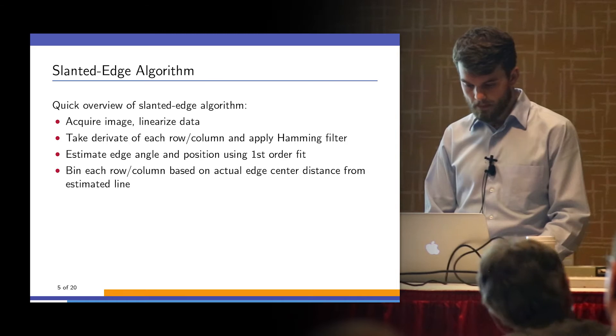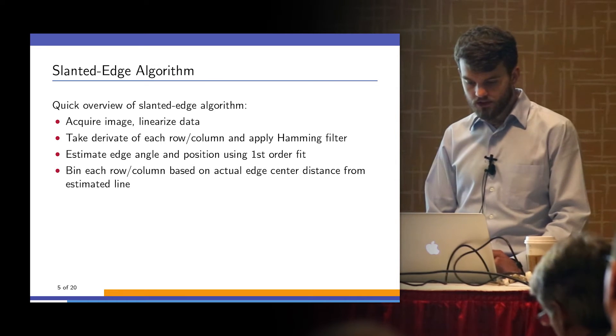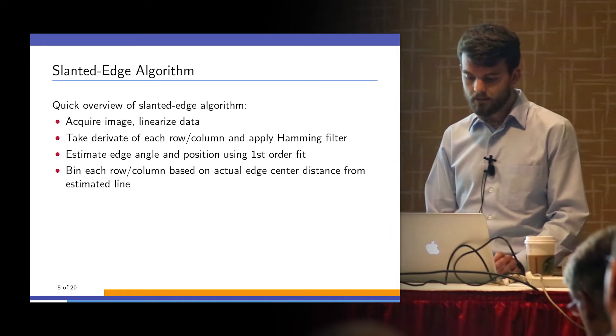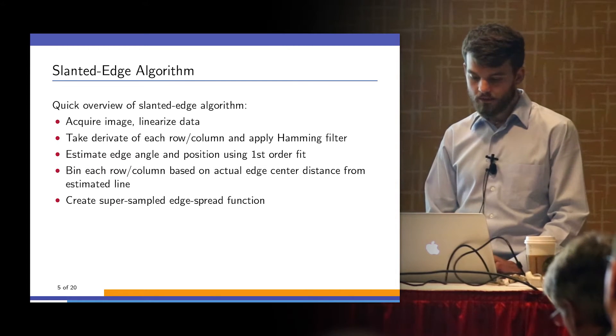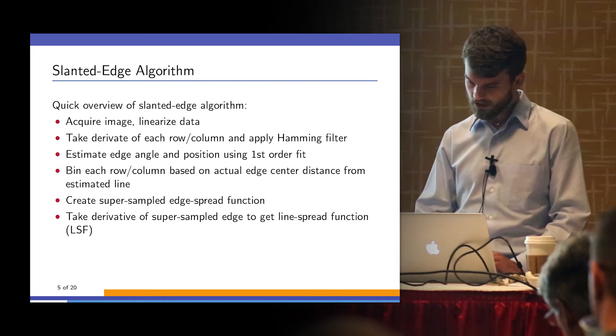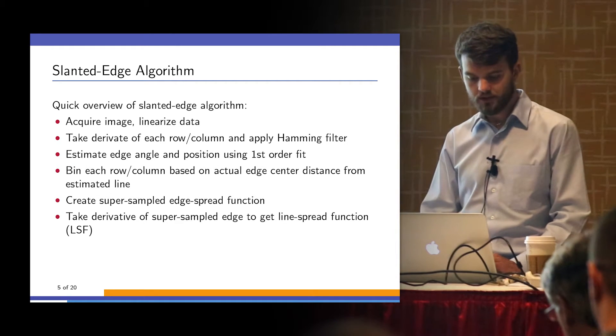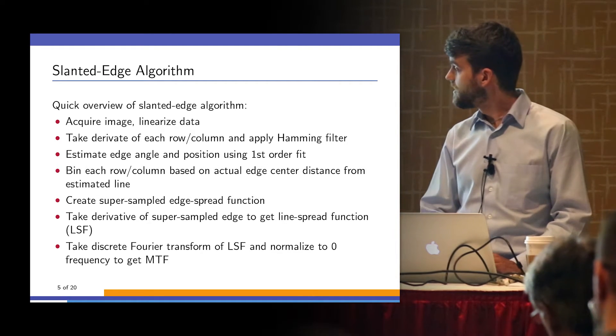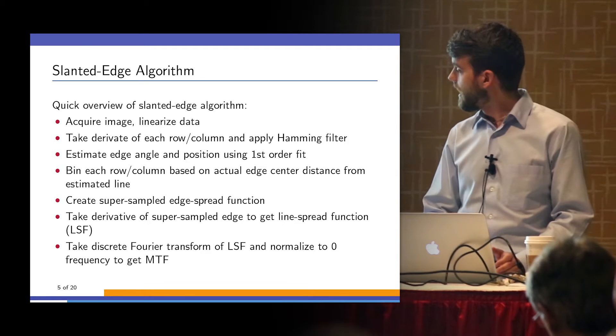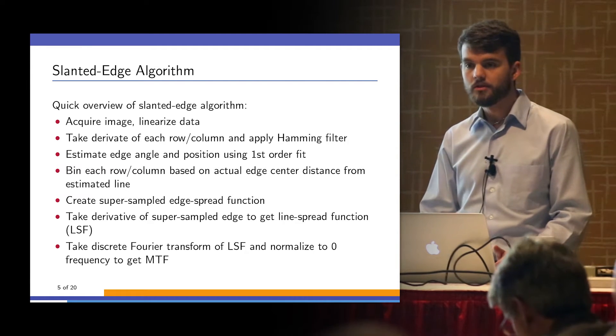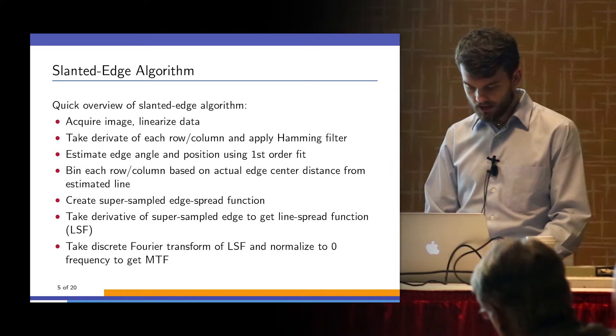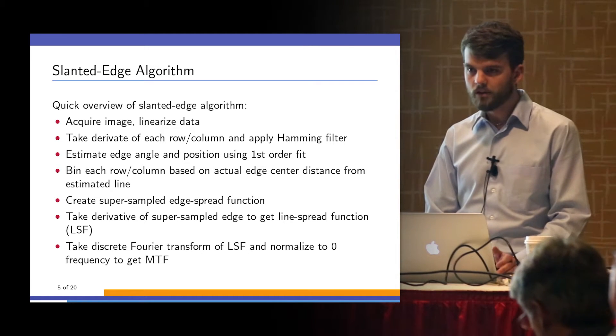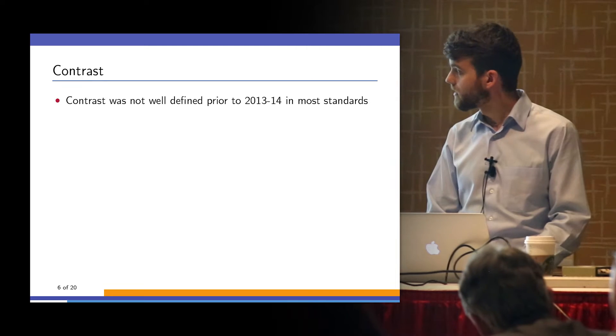Bin each row or column based on the actual edge distance. From that, create a supersampled edge spread function. Take a derivative of the edge spread function, get the line spread function. Finally, take a discrete Fourier transform and use the magnitude normalized to the zero frequency to get MTF. Not terribly complicated and very well described in a lot of modern literature.